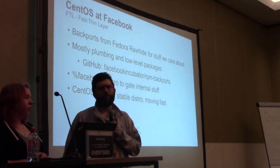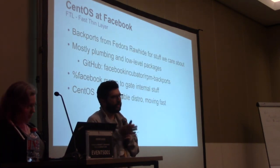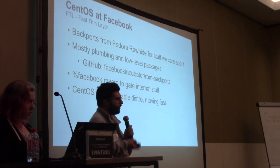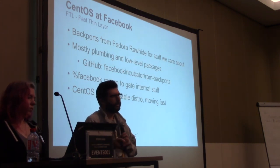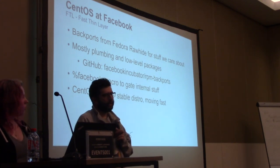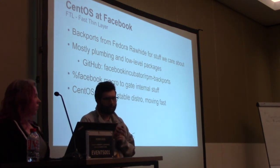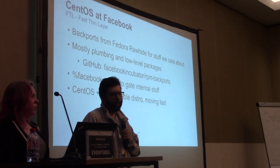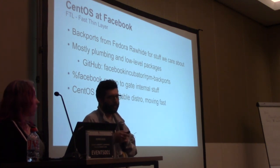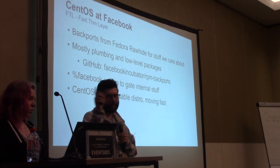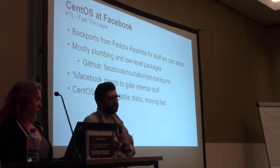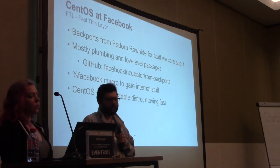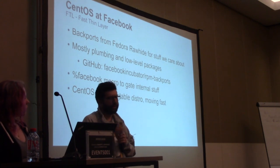To be able to move as fast as we need to but still on a stable base, we take a thin layer of backports from Fedora, usually for projects that we want to follow closely. For example, we do a lot of development work upstream on systemd, so we take the packaging from Fedora and rebuild those versions internally. The packaging is on GitHub if you're interested. We try to write this so it's useful not just to us — Facebook-specific config is gated with a macro, so if you build it outside, you don't get our internal settings. We do this mostly for low-level plumbing and try to keep it as small as possible.